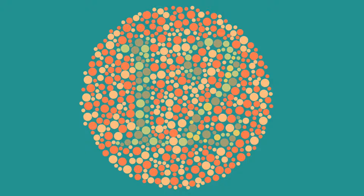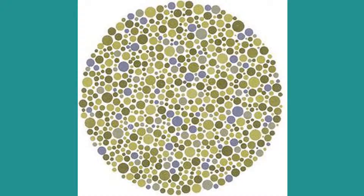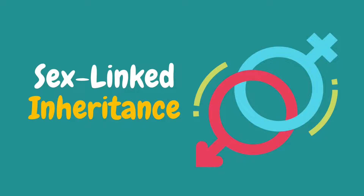Colorblindness will be discussed further in the next part of this video. If you have colorblindness, this is what you might see in the previous picture, wherein you cannot identify the number because the color of the number blends with the other color. Now let's discuss the second type of non-Mendelian inheritance, which is sex-linked traits.